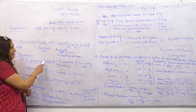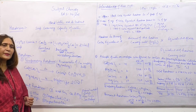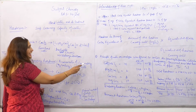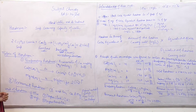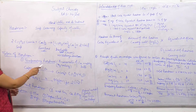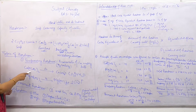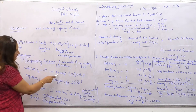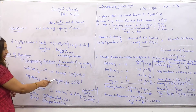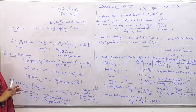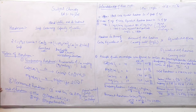Temporary hardness is due to the presence of bicarbonates of calcium and magnesium or other heavy metal ions. It is also known as carbonate hardness or alkaline hardness. It can be removed by simple boiling. Calcium bicarbonate on boiling gives calcium carbonate precipitate. Magnesium bicarbonate on boiling gives magnesium hydroxide precipitate. It means temporary hardness can be removed by boiling.